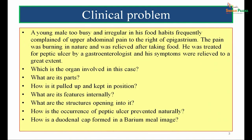Now, as in any other session, we will go to a clinical problem. A young male, too busy and irregular in his food habits, frequently complained of upper predominant pain to the right of epigastrium. The pain was burning in nature and was relieved after taking food. He was treated for peptic ulcer by a gastroenterologist and his symptoms were relieved to a great extent. Which is the organ involved in this case? What are its parts? How is it pulled up and kept in position? What are its features internally? What are the structures opening into it? How is the occurrence of peptic ulcer prevented naturally? How is the duodenal cap formed in a barium meal image? After going through this entire session today, we will analyze this case, resolve it, and answer all these questions. Let us move on to the core topic today — duodenum.